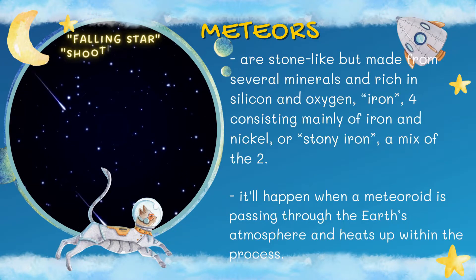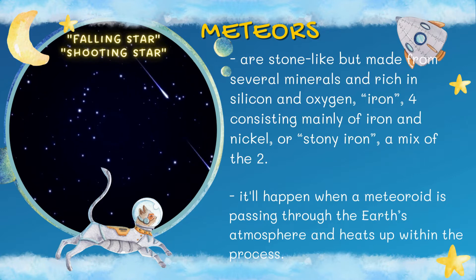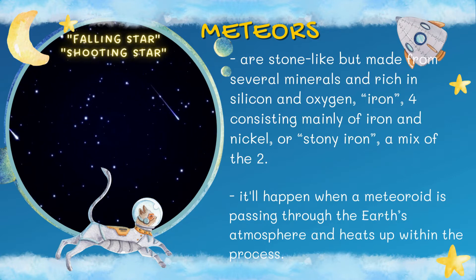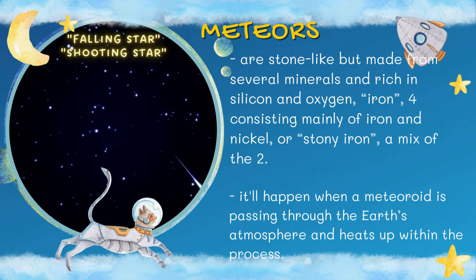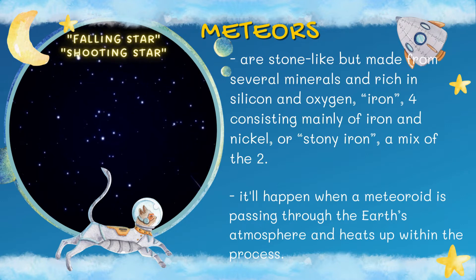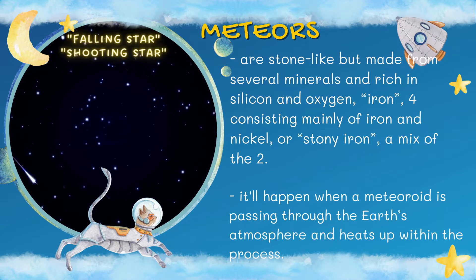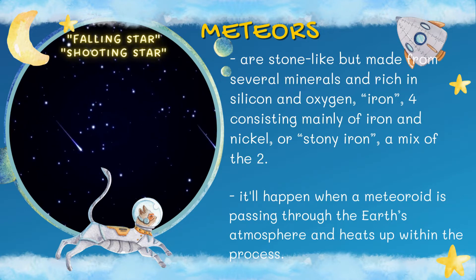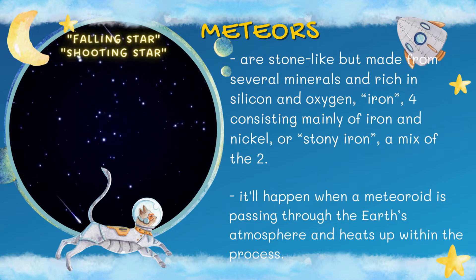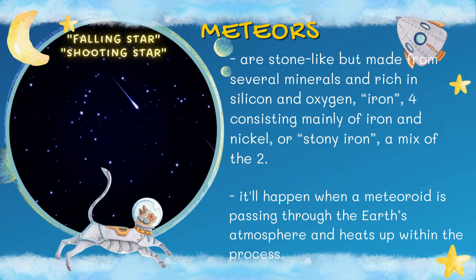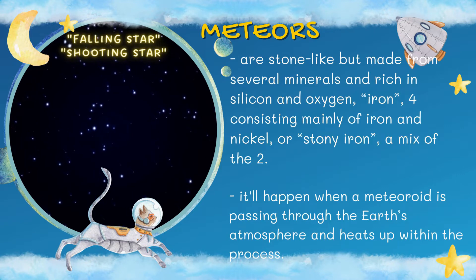Now let us proceed to meteors. Can you ask your parents and other family members about a falling star? What is a falling star? Meteors are another known celestial object within the solar system. They are dust-like particles from the pathway of comets. Meteors are stone-like but made from several minerals and rich in silicon and oxygen, consisting mainly of iron and nickel, or stony iron, a mix of the two.